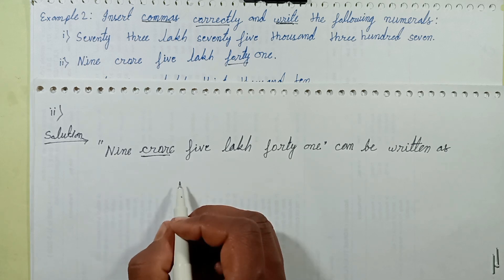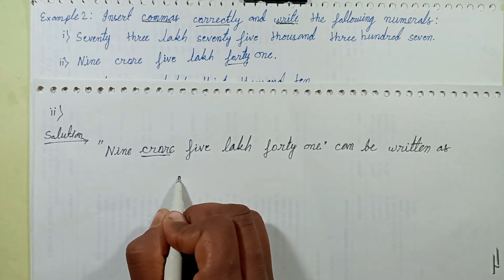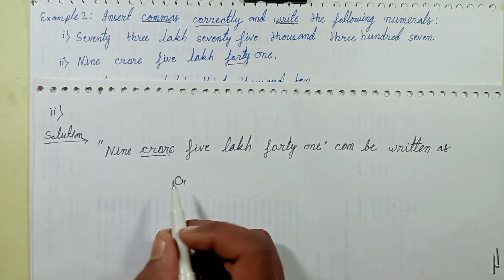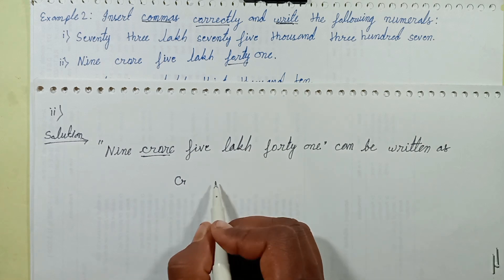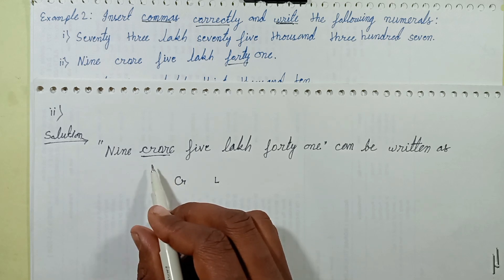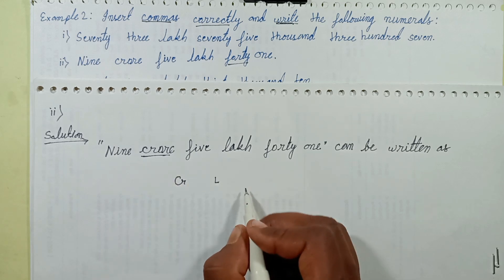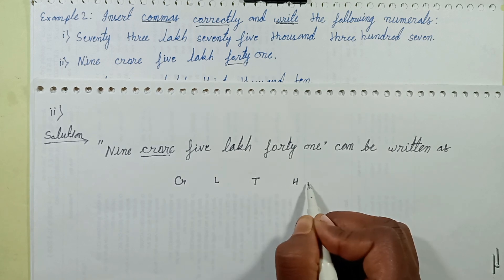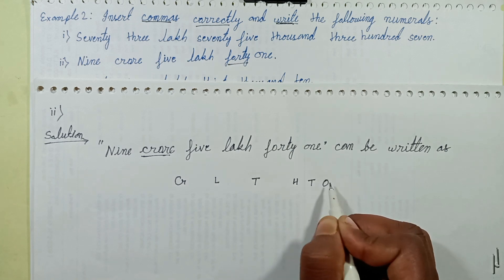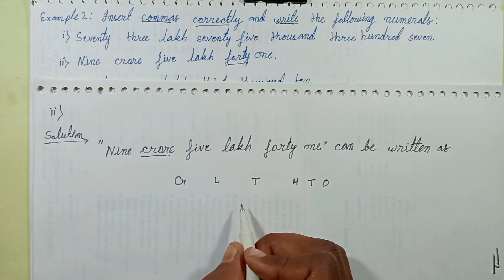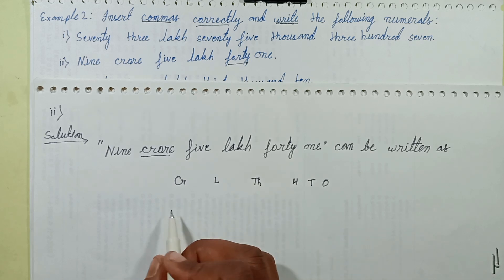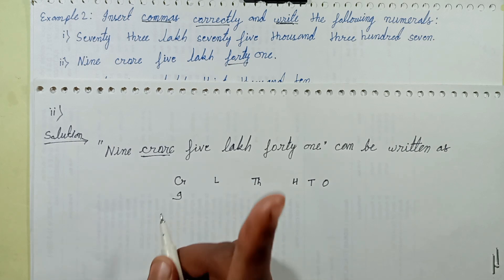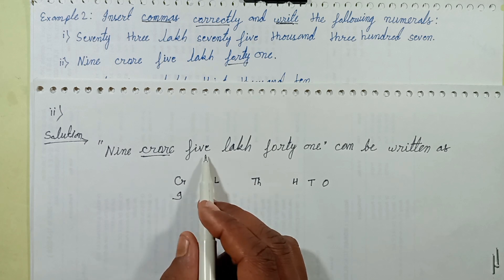The greater value is crore. First, separate crore by period, then lakh by period. Crore is the highest period; then lakh, then thousands, then hundreds, tens, and units — which form the ones period.